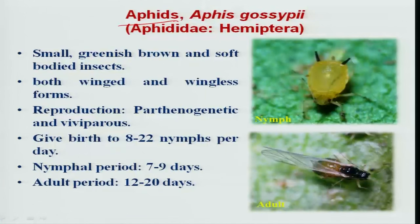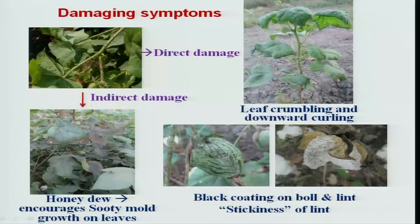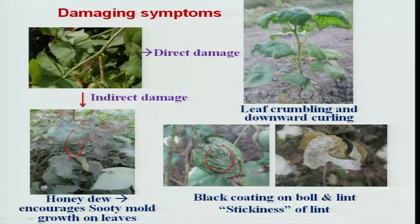Aphids — both nymphs and adults — cause both direct and indirect damage. They congregate on growing tips and produce honeydew secretion, which falls on the leaves and later on the bolls, enhancing development of sooty mold, giving the plant a sticky appearance.